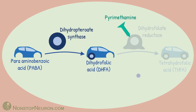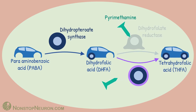However, some of them start producing a mutated dihydrofolate reductase. Pyrimethamine cannot inhibit such a mutated enzyme. So such parasites can keep producing tetrahydrofolic acid with the help of these new enzymes, and grow even in the presence of pyrimethamine. This resistance to pyrimethamine is a big problem if pyrimethamine is given alone.